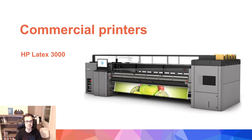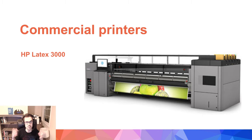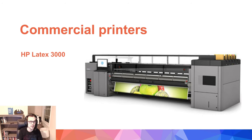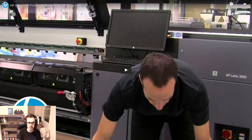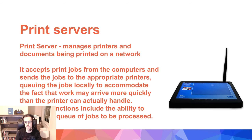Then we have commercial printers. HP's Latex 3000 literally prints on latex — these massive banners you've probably seen on the sides of buildings. It's a big printer, and they can even print multiple sections and stitch them together to make this massive thing on the side of a building. There's a video on that in the description. The ink for these types of printers is a big deal — it's actually like mixing paint together, and you just pour it in the machine and it prints.